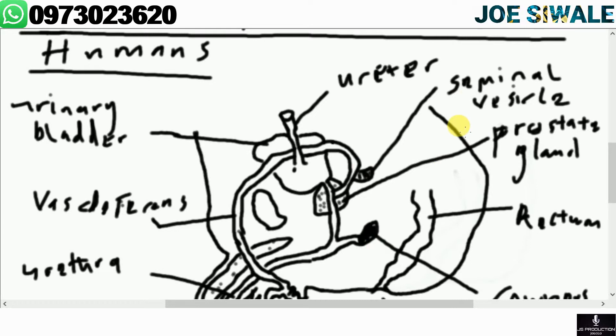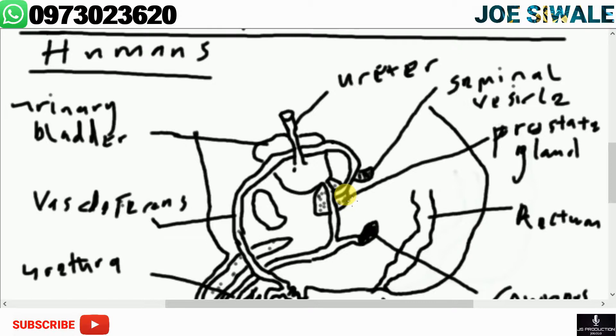The prostate gland produces a fluid that contains enzymes and anti-coagulation factors that contribute to the production of semen.